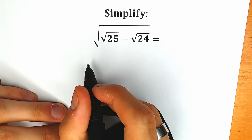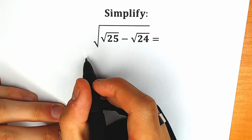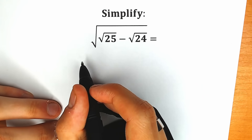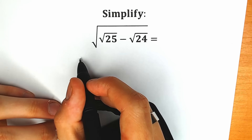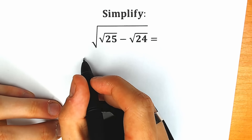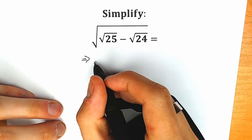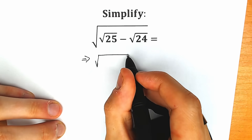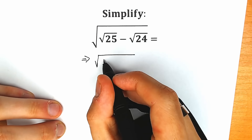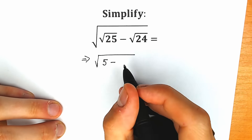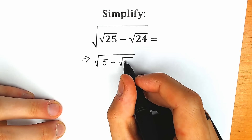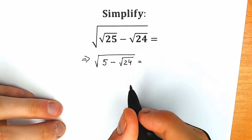Let me explain why that is a wrong answer and how to solve it correctly. First of all, square root of 25 equals 5. So we have square root of 5 minus square root of 24. This is our first step.